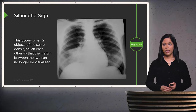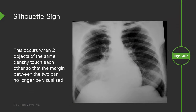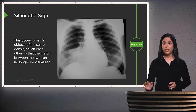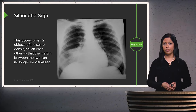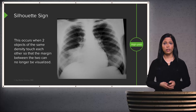Now let's talk about the silhouette sign, briefly mentioned in an introductory lecture. It occurs when two objects of the same density touch each other so that the margin between them can no longer be visualized. Here, there's consolidation involving the right middle lobe, and the right heart border is no longer visible — the consolidation is silhouetting the right heart border because it is of equal density to the heart.